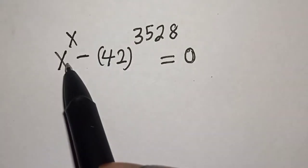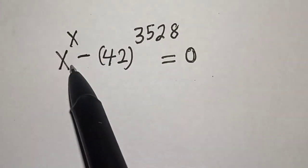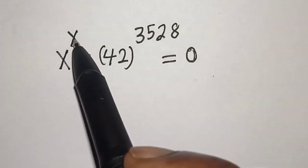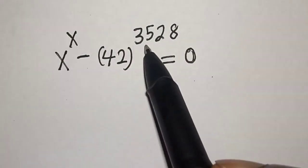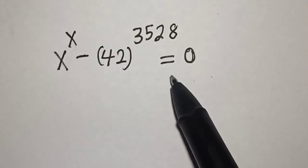Hello, welcome to Magist. In this class, we want to find the value of x from this equation: x raised to power x minus 42 raised to power 3528 is equal to 0.